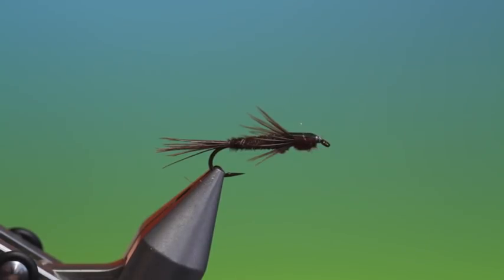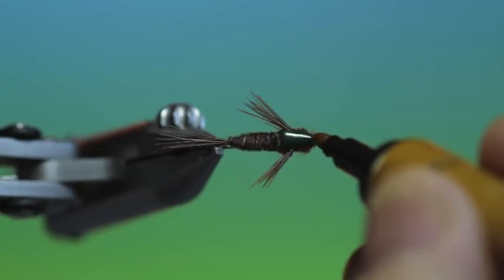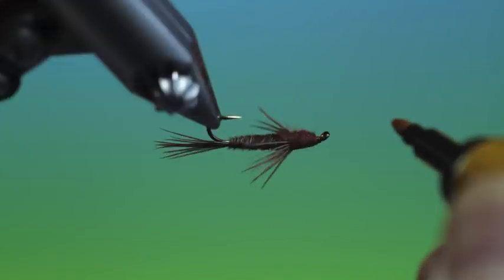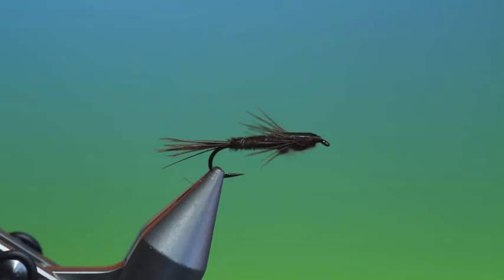And again you can put a drop of just colour the head if you like, or put a good drop of brown varnish on there, olive varnish. Like so. And that's the finished pheasant tail stonefly nymph.